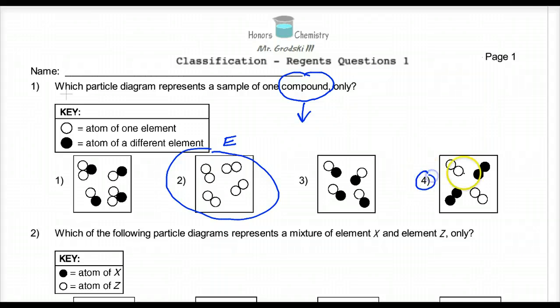If I look here in two, I see that is just the same type of atoms. This would, of course, be an element. Number four, interesting enough, is two different elements. Here's one element, and here's the second. They're showing the same element bonded to each other. This is an example of a diatomic element.